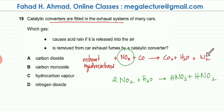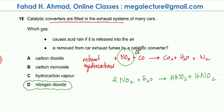They are converted into nitrogen. So nitrogen dioxide is the correct answer for this question, because it is the gas which causes acid rain if released into the air, and it is also removed from the car exhaust by the catalytic converter.